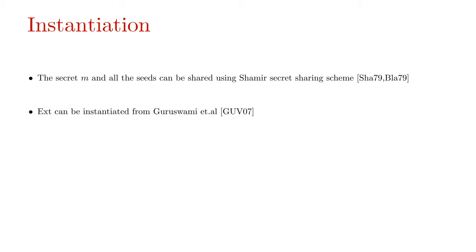With this, we conclude the discussion on our construction and security and briefly tell you how we instantiate the building blocks in our construction. We instantiate the secret sharing schemes with the Shamir secret sharing scheme and then instantiate the output adaptive extractor with the GUV extractor.